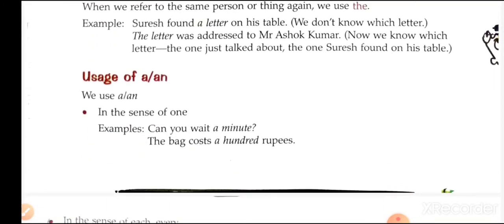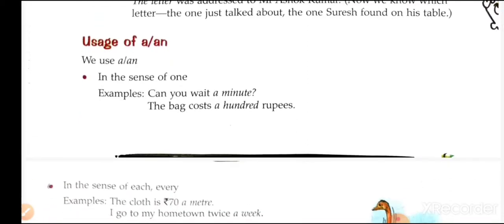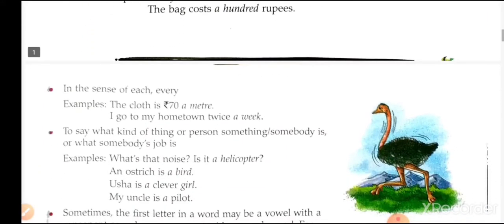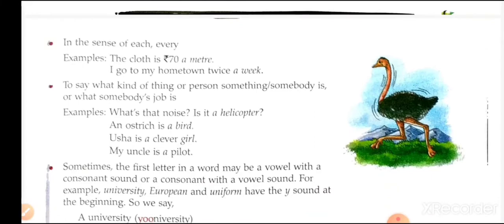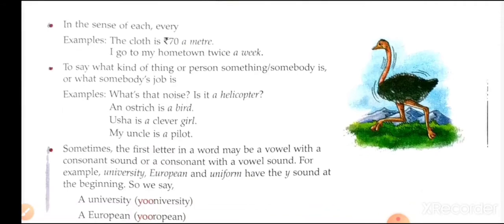Uses of 'a' or 'an': We use 'a/an' in the sense of 'one.' Example: Can you wait a minute? The bag cost a hundred rupees. In the sense of 'each' or 'every': The cloth is rupees 70 a meter; I go to my hometown twice a week. To say what kind of thing a person or something is, or what somebody's job is: What's that noise — is it a helicopter? An ostrich is a bird. She is a clever girl. My uncle is a pilot.